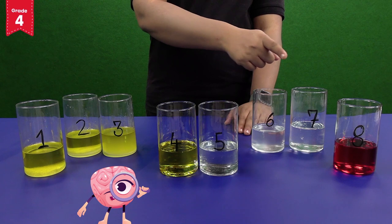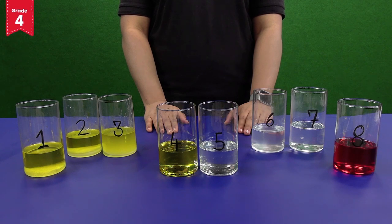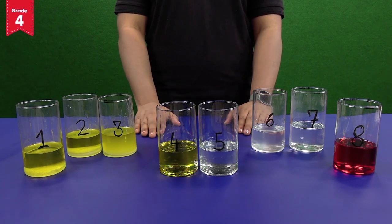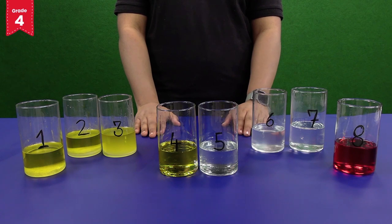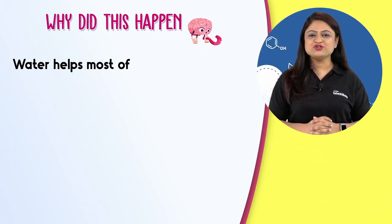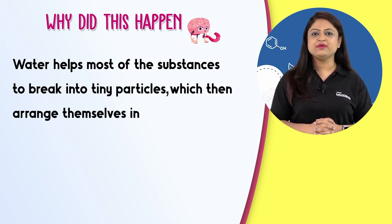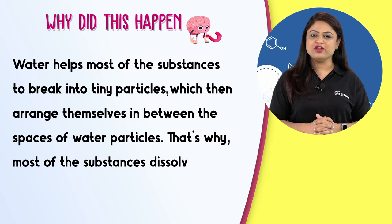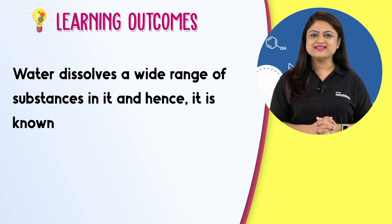Let's observe all the 8 glasses at once. Sugar, salt, baking soda, and red food colour have not dissolved in glasses 1, 2, 3, and 4 which have oil. While all 4 substances have properly dissolved in glasses 5, 6, 7, and 8 which have water in them. Water helps most of the substances to break into tiny particles which then arrange themselves in between the spaces of water particles. That's why most of the substances dissolve in water, and hence it is known as the universal solvent.